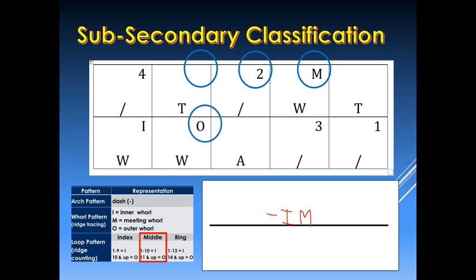For our denominator, we have the left index — this is a whorl pattern, so we will copy the ridge tracing. Based on the table, we have letter O. Next is the left middle finger — since this is an arch, we use a dash. And for the left ring finger, since this is under the ring finger table with only 3 ridge counts, our sub-secondary is letter I. So our sub-secondary classification is dash-IM over O-dash-I.